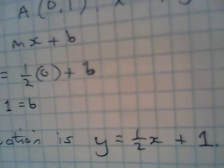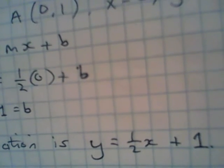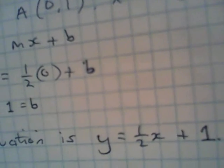So here we have y equals half x plus 1. That's m is the slope, half, and b is 1. That's the general equation of the line.